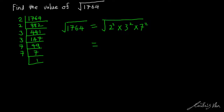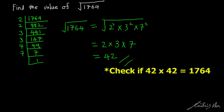Then we divide all the powers by 2, and we get 2 times 3 times 7, which gives us 42. So 42 is our answer. Remember to check whether 42 times 42 gives us back 1764.